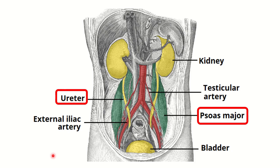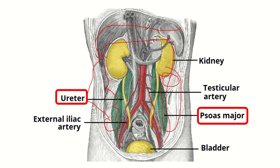First, let's identify where the left colon lies. The cecum is present here, then the ascending colon, then the transverse colon, and from the transverse colon the descending colon continues — this is the region of the left colon.